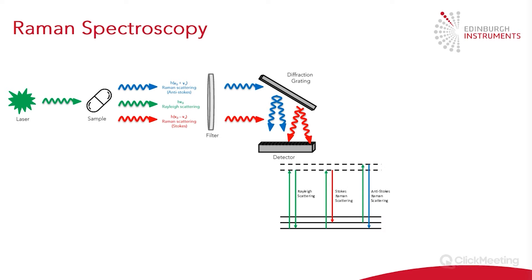This is the energy diagram for the three types of scattering that can occur. As mentioned, with Rayleigh scattering there is no net energy difference. In Stokes and anti-Stokes Raman scattering, both of these provide us with Raman information. However, Stokes is much more likely to be observed, and is therefore the more commonly used technique. This is because for anti-Stokes, you have to start in an already excited state, which naturally is just much less likely for your sample to be in.